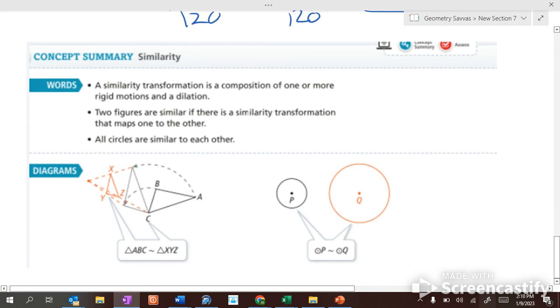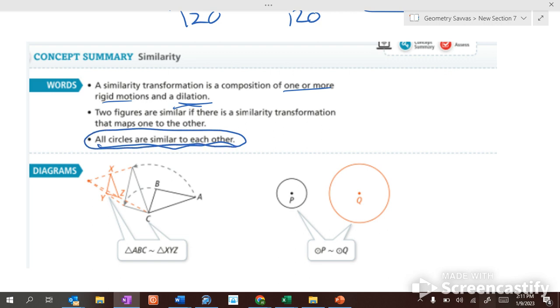All right. So what did we learn? Well, similarity transformations is the composition of one or more rigid motions and a dilation. A dilation has to be part of it to be a similarity one. Otherwise they're equal in size and they're not similar. Okay? So a dilation is part of it and one or more of the others. Two figures are similar if their similarity transformation maps one onto another. Their sides are proportional and their angles are congruent. The last thing that we didn't really talk about, but that you need to know, is all circles are similar to each other. Okay? Because what's the one dimension of a circle? It's what?